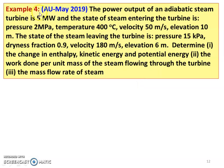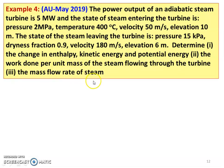First problem, Example number 4, from Anna University exam May 2019. The power output of an adiabatic steam turbine is 5 megawatt. The state of steam entering the turbine: pressure 2 megapascal, temperature 400 degree Celsius, velocity 50 meters per second, elevation 10 meters. The state of the steam leaving the turbine: pressure 15 kilopascal, dryness fraction 0.9, velocity 180 meters per second, elevation 6 meters. Determine: 1. The change in enthalpy, kinetic energy and potential energy. 2. The work done per unit mass of steam flowing through the turbine and the mass flow rate of the steam.